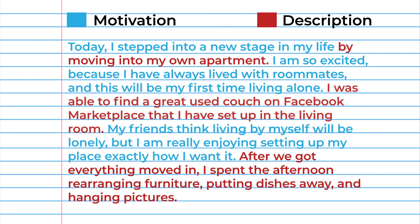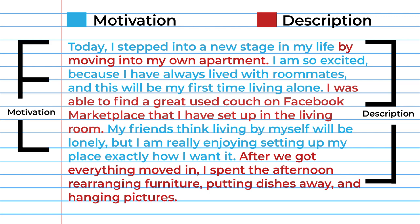After we got everything moved in, I spent the afternoon rearranging furniture, putting dishes away, and hanging pictures. The section in red, where the narrator talks about moving in, setting up the furniture, etc., are the descriptions of the event — this is what happened. The section in blue, where the narrator talks about feeling excited and enjoying setting up their new place, are the motivation. These sentences describe the thoughts and feelings of the narrator, and help the reader understand the narrator as a person.